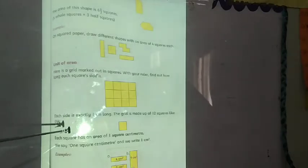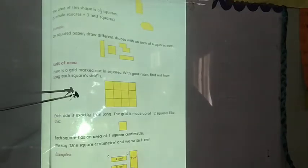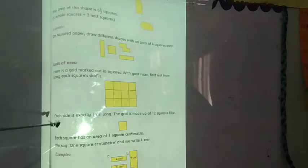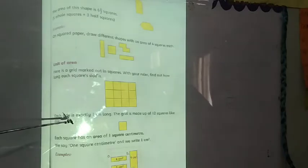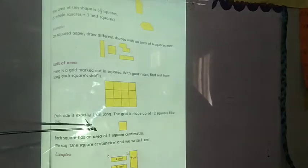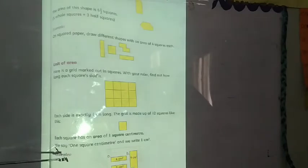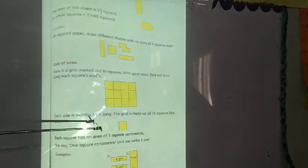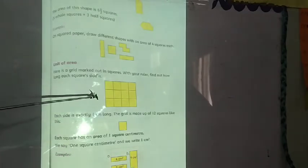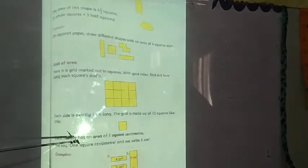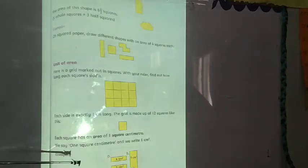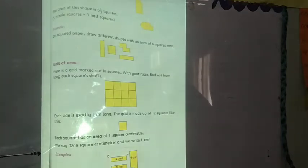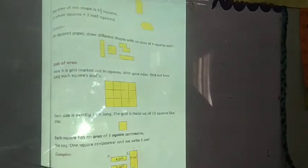Unit of area. Here is a grid marked out in squares. With your ruler, find out how long each square's side is. Each side is exactly 1 cm long. The grid is made up of 12 squares. Each square has an area of 1 square cm. We say 1 square cm and write it as 1 cm².